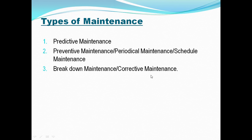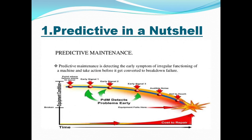Predictive maintenance can be carried out by an experienced person only. In predictive maintenance, when you go to a crusher or machine, it gives some kind of early signals — maybe in the form of a noise or an abnormal sound. If we rectify the issue at that stage, we can save cost. Predictive maintenance is about detecting early symptoms of irregular functioning of a machine and taking action before it develops into a major failure.